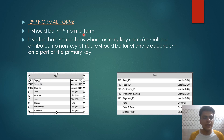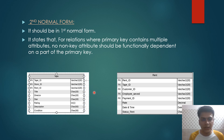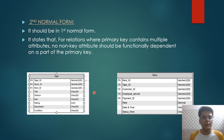The second normal form states it must be in first normal form — which we have checked — and that for relations where primary keys contain multiple attributes, no non-key attribute should be functionally dependent on only a part of the primary key. In our relations we have only one primary key and all attributes are dependent on that only, so our relations are in second normal form as well.